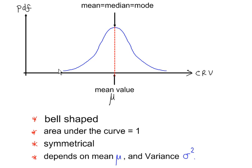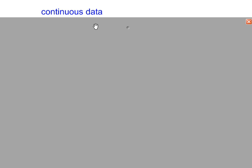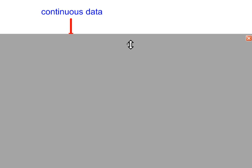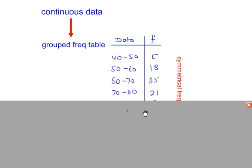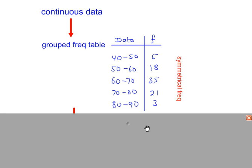Now let's have a look at how you would get a curve like this starting with some real-life data. I'm going to start with some continuous data — this could be data on the weights of students. So if we took some students and measured their weights, the best way to record continuous data is in a frequency table like this, where we have grouped the data. The first thing we notice is that the highest frequency is in the center, and as you move away from the center in both directions the frequencies drop off rapidly on each side.